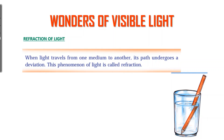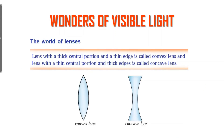A lens with a thick central portion and thin edge is called a convex lens. A lens with a thin central portion and thick edge is called a concave lens. Clear? A lens with a thin center portion and thick inner edge is called a concave lens.